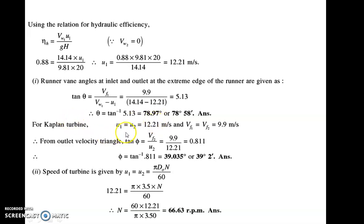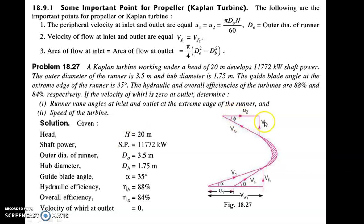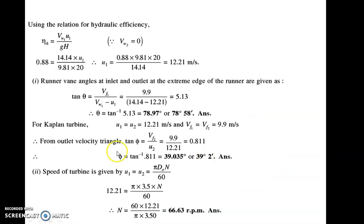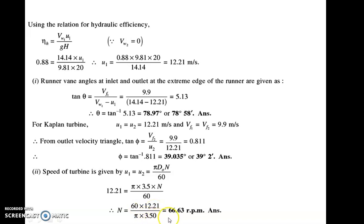For the Kaplan turbine, u1 equals u2 and Vf1 equals Vf2, as both are at the same distance from the shaft. So tan of phi equals Vf2 upon u2, which equals 0.811, and phi equals tan inverse of 0.811, coming as 39.035 degrees. So theta and phi — the runner vane angles at inlet and outlet — are found. For the speed of the turbine, u1 equals pi·do·N upon 60, with do equal to 3.5 meters and u1 equal to 12.21, so N equals 60 times 12.21 upon pi times 3.5, giving 66.63 rpm.